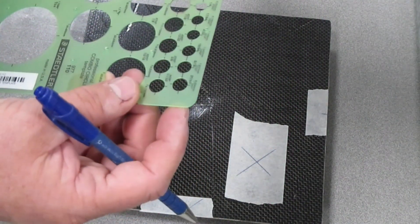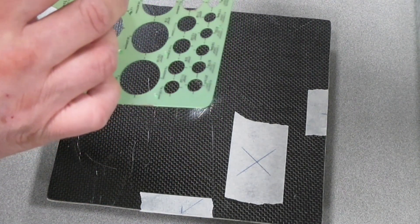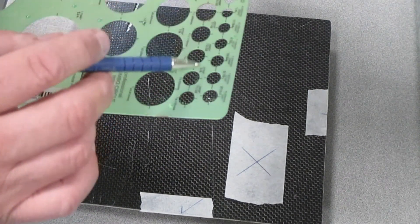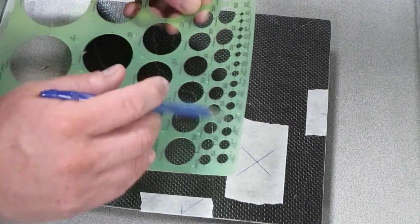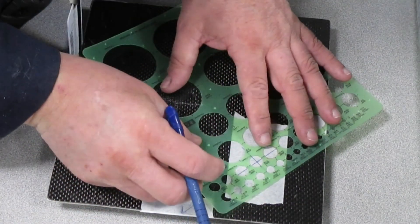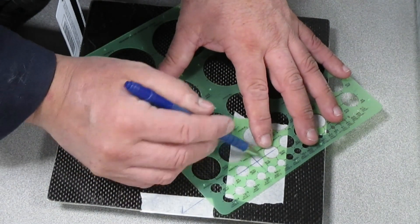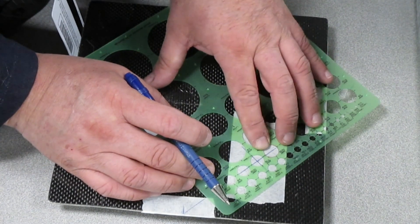I'm going to find seven sixteenths, which is right between half and three eighths. This one right here is seven sixteenths. I'm going to center it on an angle here so I can line those center lines up on my seven sixteenths hole finder.